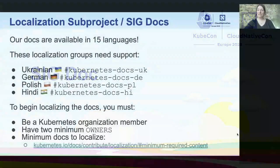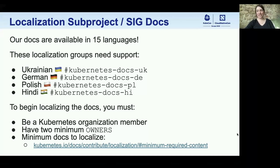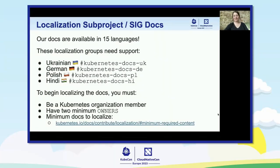A big hello from SIG Docs. The localization sub-project is now official and we have our docs available in 15 different languages. The following languages still need some support to make sure they're delivering quality content: Ukrainian, German, Polish, and newly launched in 2022, Hindi. There's been renewed interest in creating a localization, and we want to remind everyone that to do so, you need to be a Kubernetes organization member, which means you're already contributing to the project in some way. We look forward to seeing new localizations and continued work on our current languages throughout 2023.